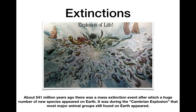A classic example of this is the Cambrian Explosion, about 541 million years ago. After a mass extinction event caused by climate change, most species went extinct, and then the single largest burst of new species in Earth's history occurred. We know this from the fossil record. Most of the major animal groups that still exist on Earth first appeared during the Cambrian Explosion, because there was no competition, very little predation, and all those resources and niches were available to fill.